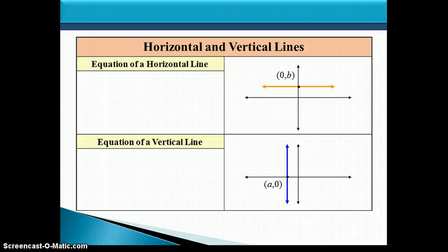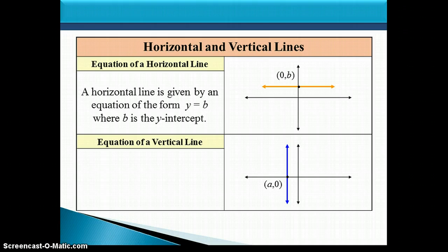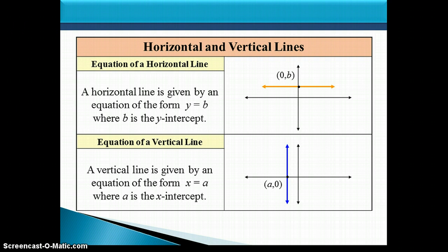Now let's look at some special lines. Horizontal and vertical lines are different from slanted lines because they only have one intercept, so finding two intercepts isn't enough. A horizontal line only has a y-intercept, and a horizontal line is given by an equation of the form y equals b, where b is the y-intercept. A vertical line only has an x-intercept, and a vertical line is given by an equation of the form x equals a, where a is the x-intercept.